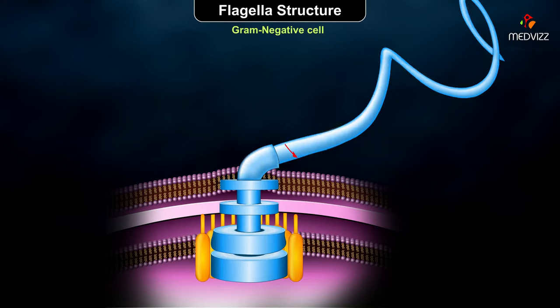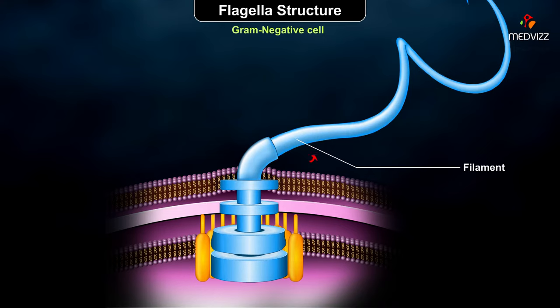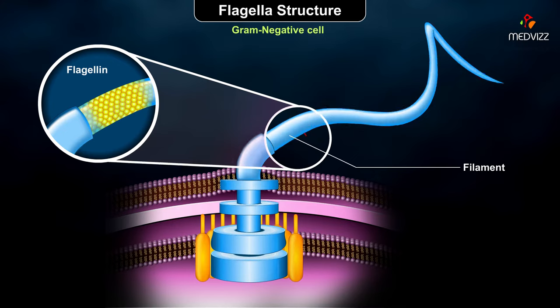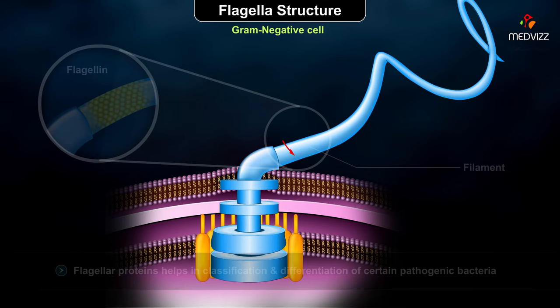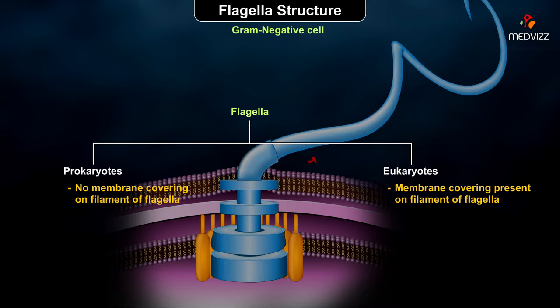The long whip-like portion of the flagellum is called the filament. Filaments are composed of many identical globular protein molecules called flagellin. Molecules of flagellin form helical chains around a hollow core. Certain pathogenic bacteria can be identified and classified by differences in their flagellar proteins. In contrast with eukaryotic flagella, no membrane covers the filament of a prokaryotic flagellum.